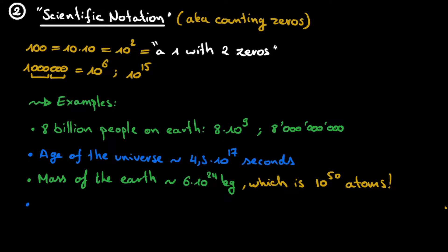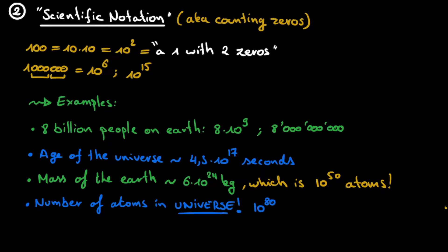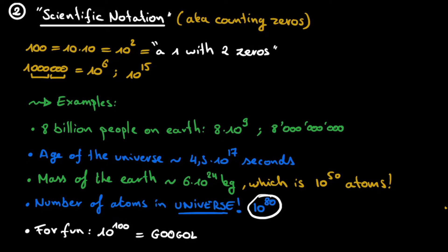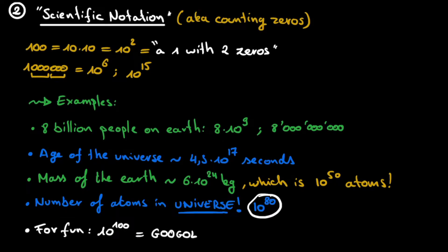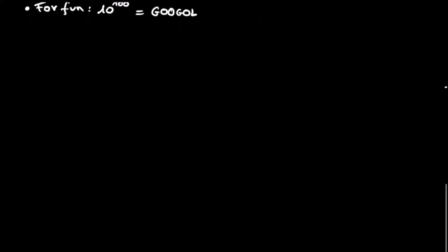But of course we can do much better. What about the total number of particles in the entire observable universe? Well, this turns out to be 10 to the power of 80 — a 1 with 80 zeros. And just for fun, let's talk about 10 to the power of 100, a 1 with 100 zeros. This is called a Googol, and it is indeed the number that the company Google based its name off. So these are already pretty large numbers, but we can go even bigger still.